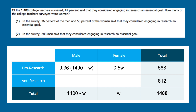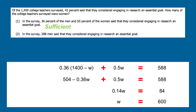We could start filling in the anti-research cells, but notice something: we now have all three cells filled in for our pro-research row. This gives us the equation: 0.36 × (1,400 − W) + 0.5W = 588. We can simplify this equation to solve for W, which is exactly what we want to find — this makes statement one sufficient. Simplifying gives us 600 female teachers in total, so statement one is definitely sufficient.